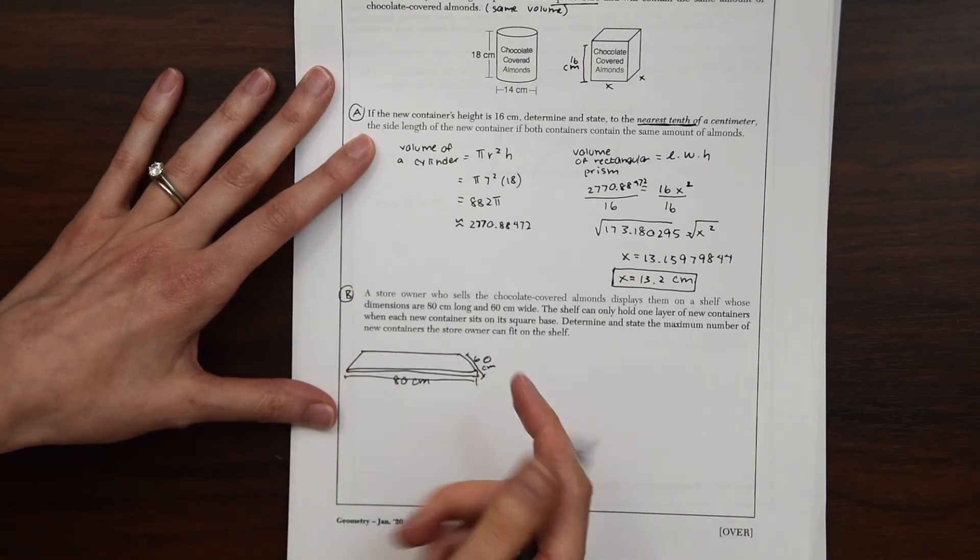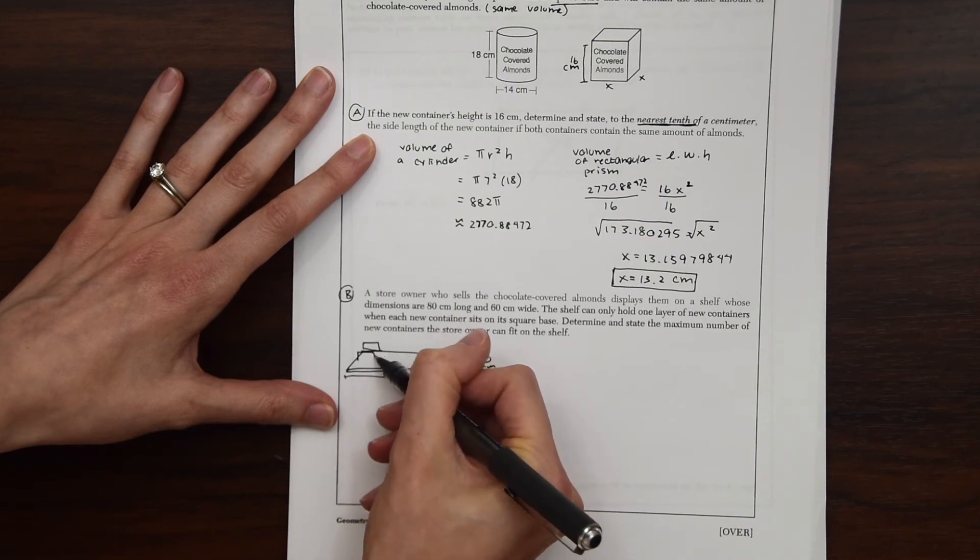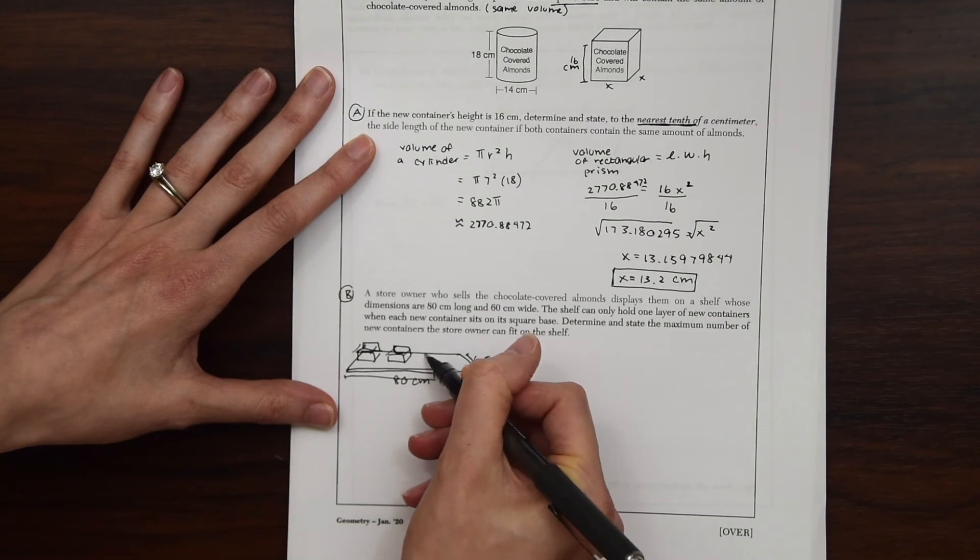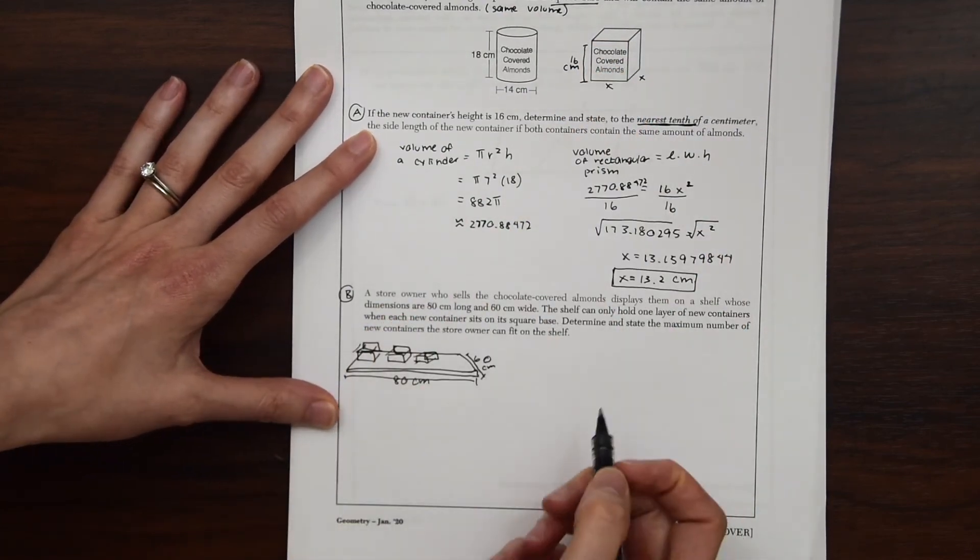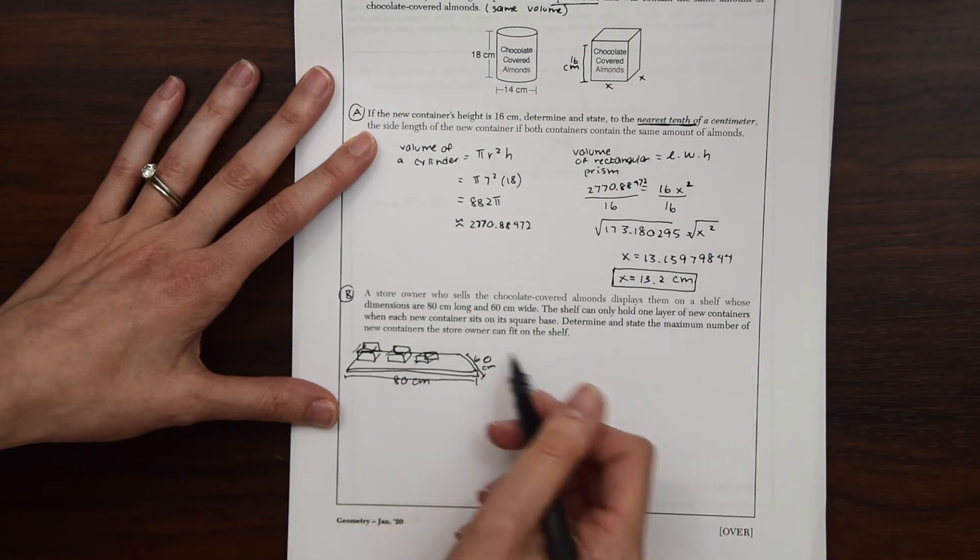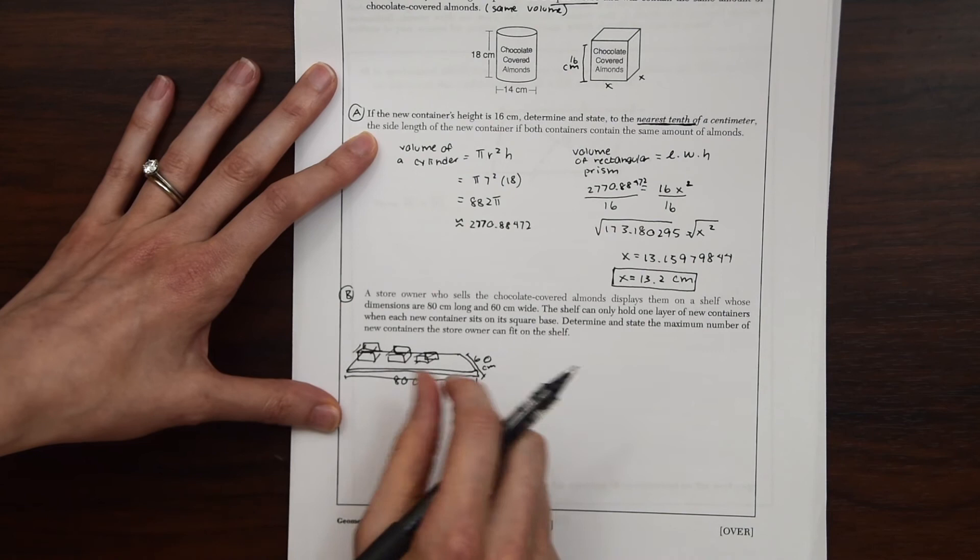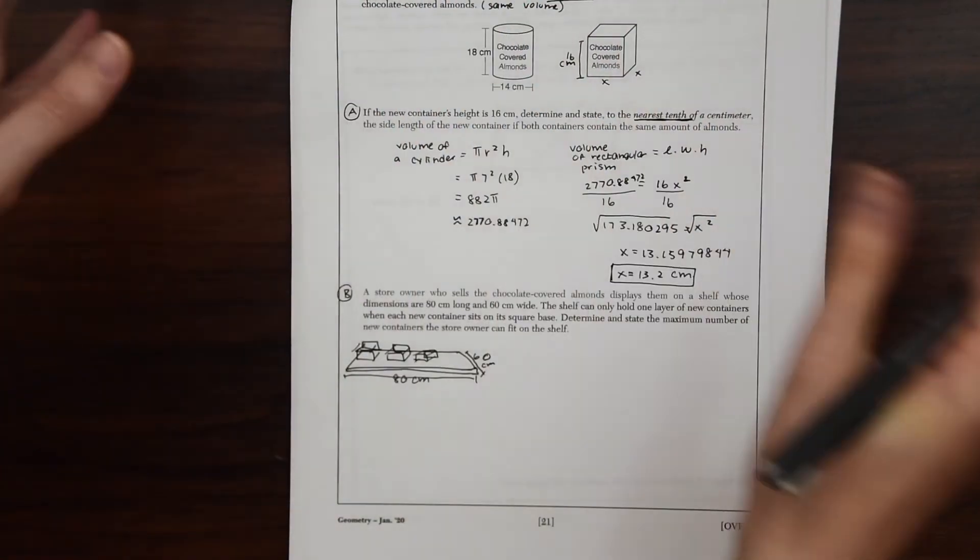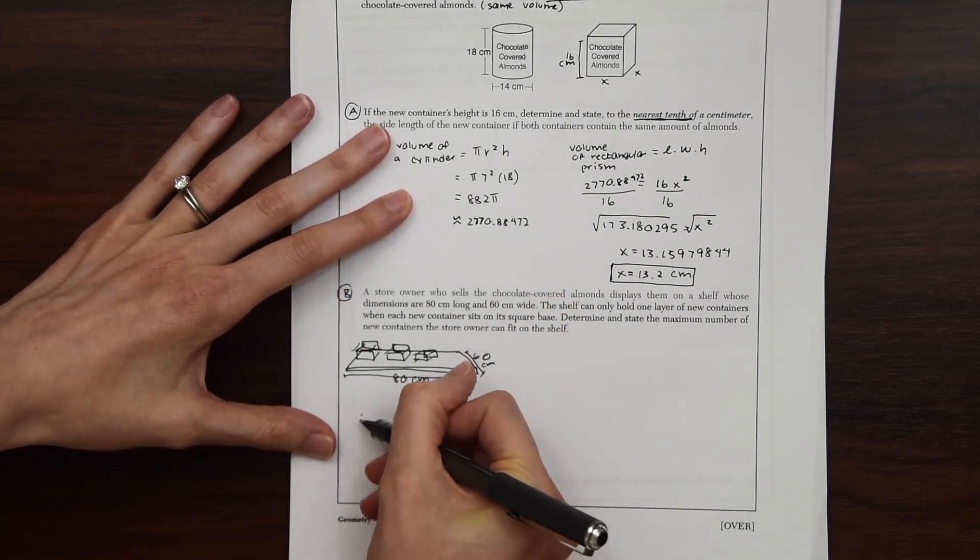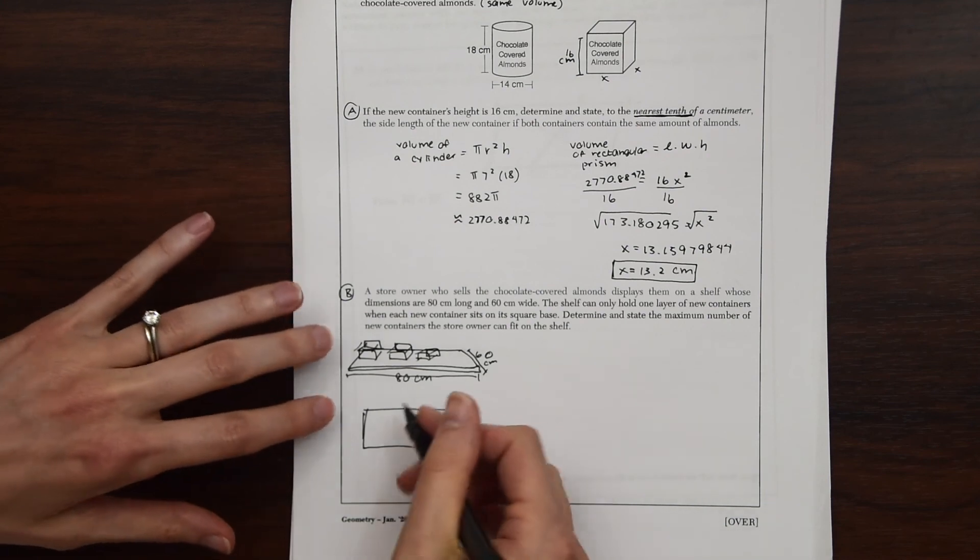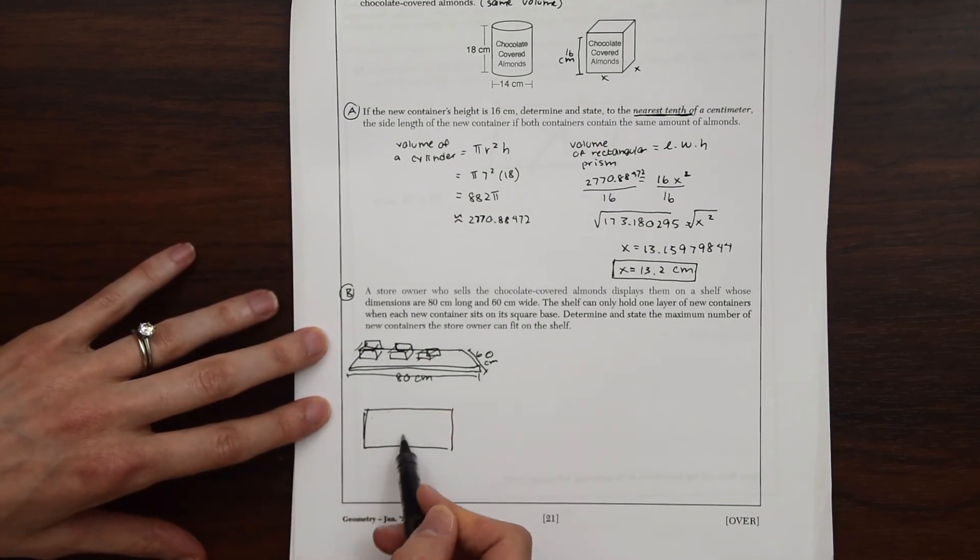The shelf can only hold one layer of new containers when each new container sits on its square base. So just imagine we're placing these containers onto this shelf. And we're saying that we're not going to stack them, that they're just lined up next to each other perfectly on one layer. So just imagine that each of these is this box of almonds on this shelf. So we only have one layer. And when each new container sits on a square base. Determine and state the maximum number of new containers the store owner can fit on the shelf. So we want to find out the maximum number we can fit on here. So we want to know how many can go this way and this way. So forward from side to side and from back to forward. So if we were looking from a top view, how many, so let's say this is the shelf and we have a bird's eye view of it. We're looking down on the shelf and how many different containers we can fit on here.